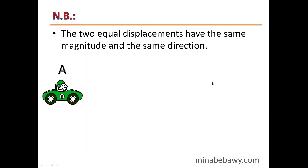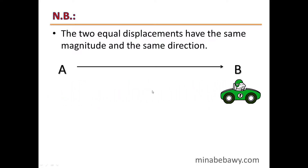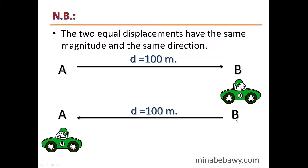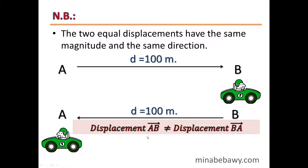Two equal displacements must have the same magnitude and the same direction. If a car moves from point A to B a distance of 100 meters, then returns from B to A covering 100 meters, the two displacements are not equal. The first displacement is from A to B, while the second is from B to A — opposite directions. For two displacements to be equal, they must have the same magnitude and the same direction.